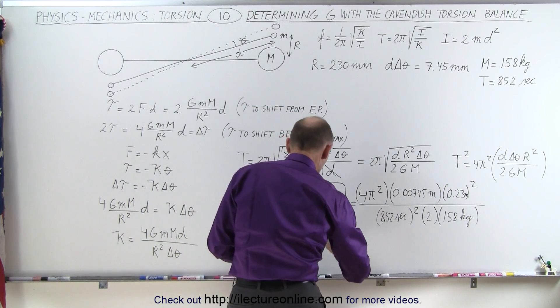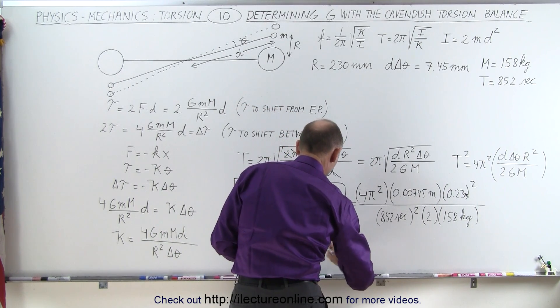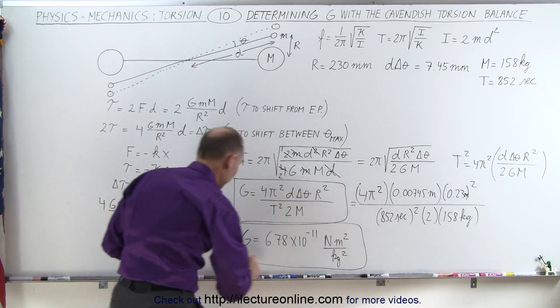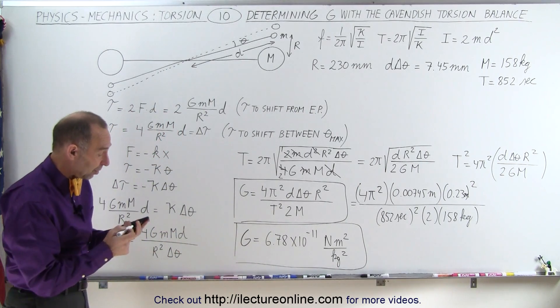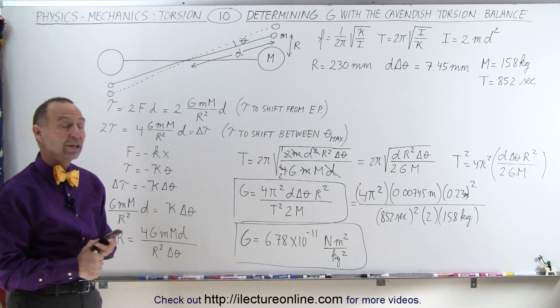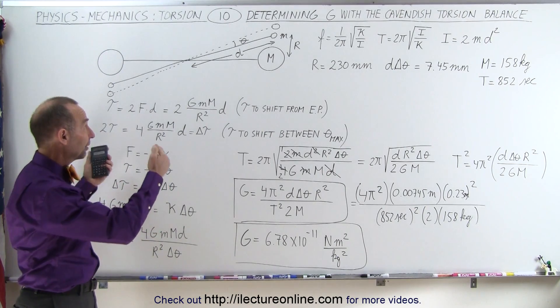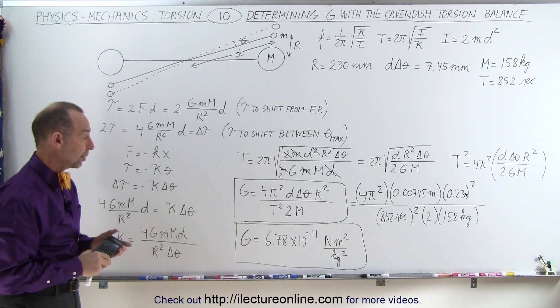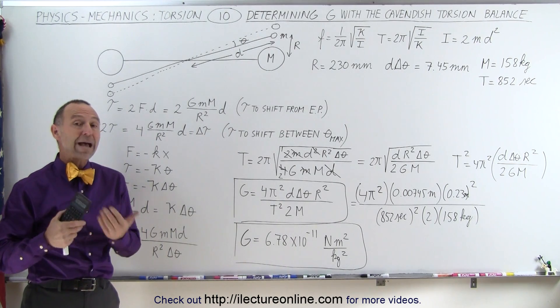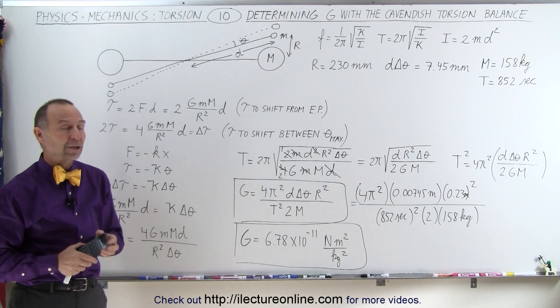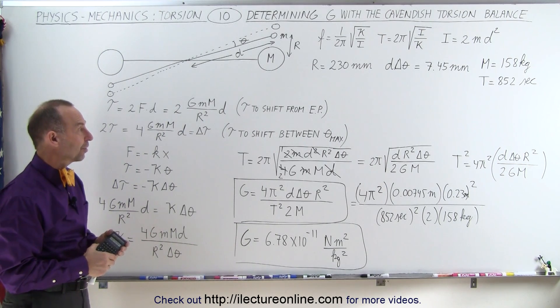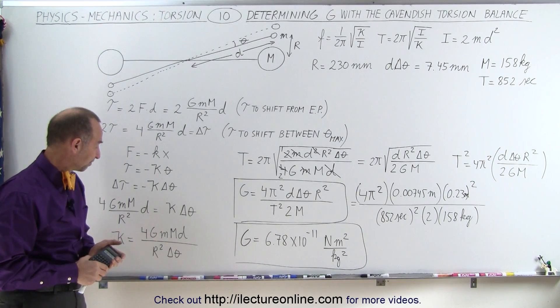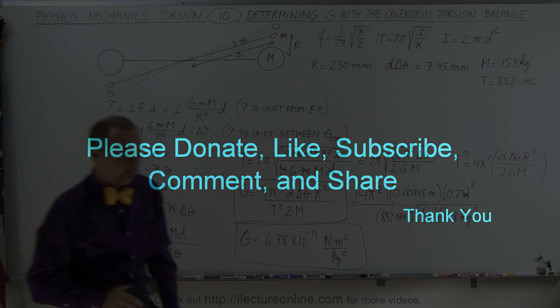Now, the units would be newtons meters squared per kilogram squared. That's not very different from the actual value of 6.67. Matter of fact, that is about 1 to 2 percent difference. And notice that Cavendish, with very clever thinking, was actually able to come up with a constant that was very close to the actual constant that we now know. And so he was able to measure the mass and the density of the Earth quite accurately as well. Quite a feat for something that was done almost 200 years ago.